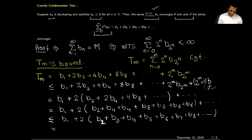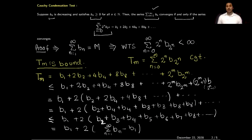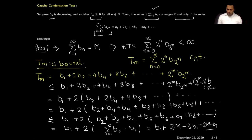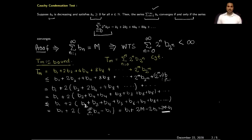After the replacements, I notice I have B_1 plus 2 times the series starting from B_2, B_3, B_4, B_5, ... which is essentially the full series summation from n=1 to infinity of B_n minus the first term. This equals B_1 + 2*(M - B_1) = 2M - B_1. Therefore, T_m is bounded above by the real number 2M - B_1, proving the sequence of partial sums is bounded above.